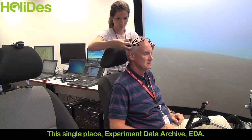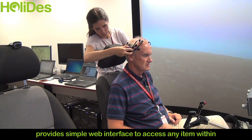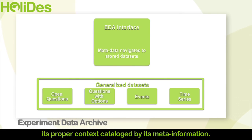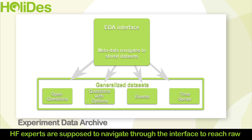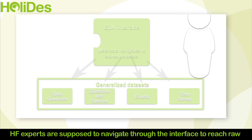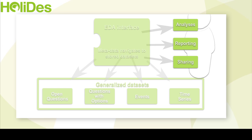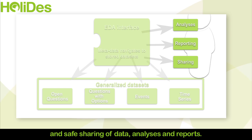This single place, Experiment Delta Archive — EDA — provides a simple web interface to access any item within its proper context, catalogued by its meta information. HF experts are supposed to navigate through the interface to reach raw or pre-processed data in order to undertake the analysis or reporting. The design of the interface also allows for efficient and safe sharing of data, analysis and reports.